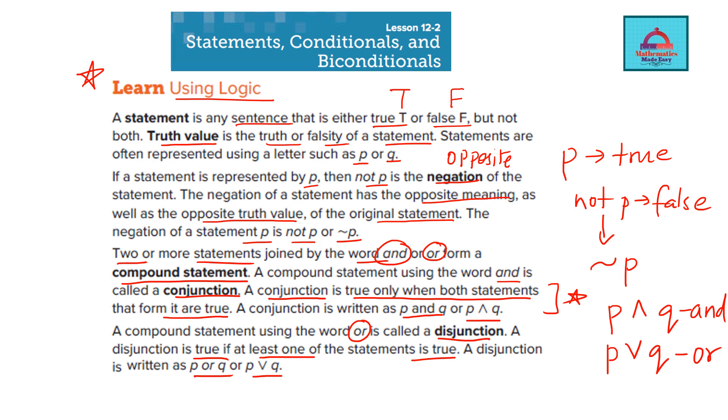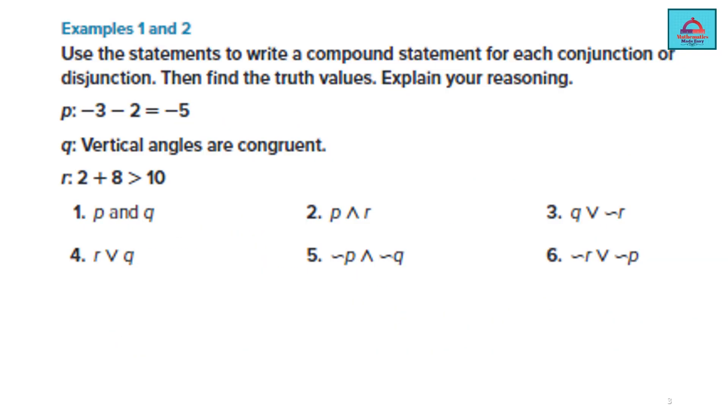Let's solve the questions now so there are three statements given the first second and third denoted by p q and r. So first let's check whether these are true or false. Minus 3 and minus 2 will give you minus 5 so this is true you can write capital T. Vertical angles are congruent this is also true and 2 plus 8 is 10 which is equal to 10 not greater than so this is going to be false. So remember your p statement is true your q statement is also true and your r statement is false.